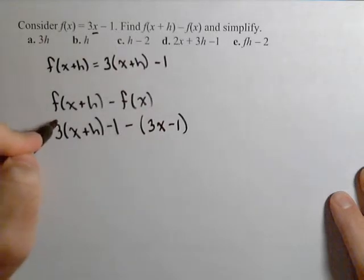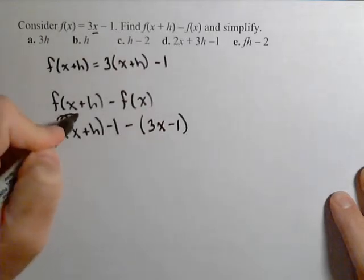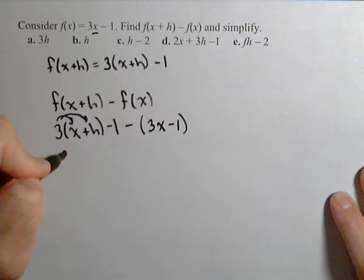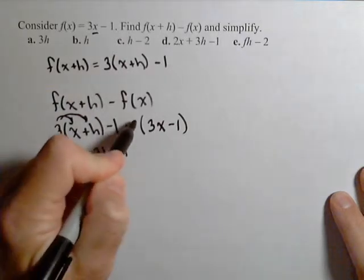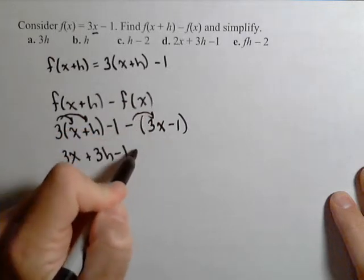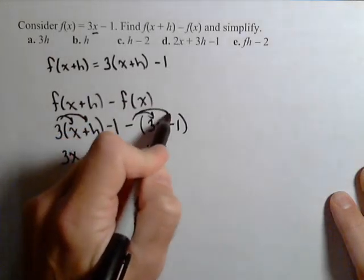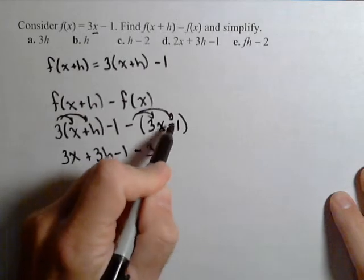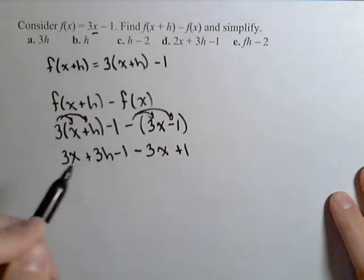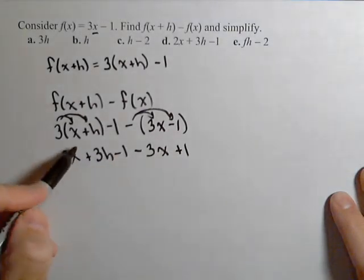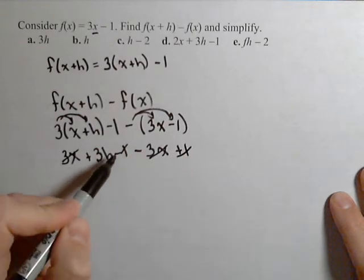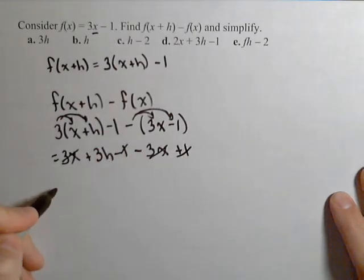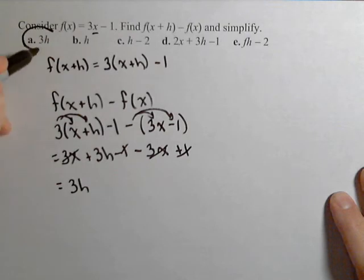Now we simplify. We're going to distribute the 3: 3 times x is 3x, plus 3 times h is 3h, minus 1. Then we'll distribute the negative, so minus 3x, and that negative times negative 1 is positive 1. We're going to get some canceling — the 3x and the negative 3x cancel, the negative 1 and the 1 cancel, and when all is said and done, this simplifies down to 3h.